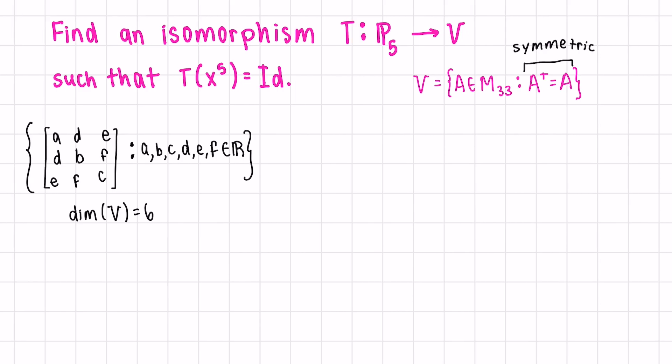We're looking for a transformation where x to the exponent 5 becomes the identity matrix. Remember that with isomorphisms, if we pick any basis in our domain, in this case P₅, and we transform it, we will get a basis in our codomain. So let's pick a basis of P₅. The standard basis would be the easiest. We already know that the transformed version of x⁵ is the identity matrix. And next, let's define the transformations for each of the other elements in the basis. We just have to make sure that all of these transformations generate a vector that's independent.